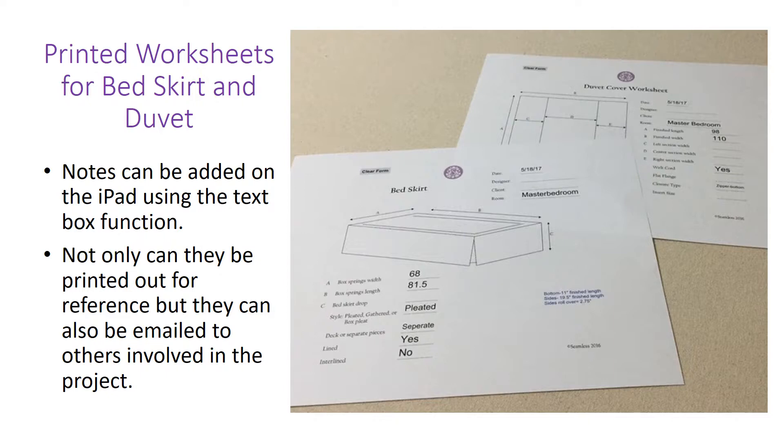The bed skirt, if you notice on the bottom right-hand side, there is a little note section that I inserted on the iPad. Because this bed had a footboard and two sideboards, she wanted it to roll over. So I have a bottom finished length that's very different from the sides. And then I also have how much needs to roll over on the top edge of those rails on the bed. And again, these are printed off. You don't have to print them off. A lot of times I don't. I simply keep them on my tablet and also on my computer so that I can get to them easily when necessary.